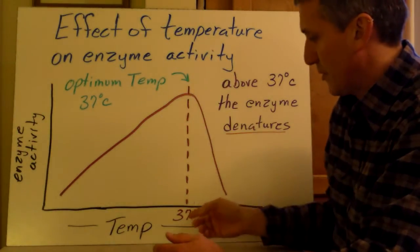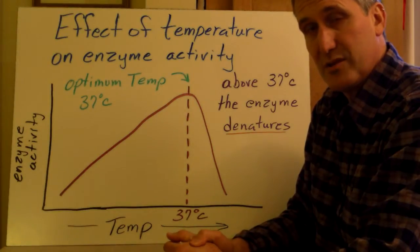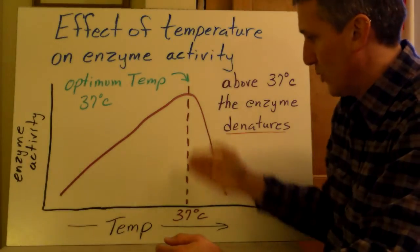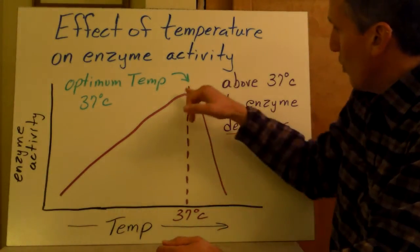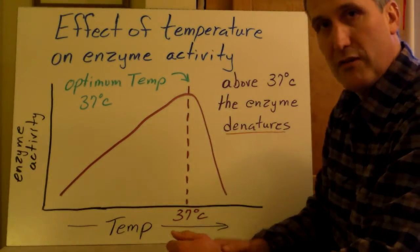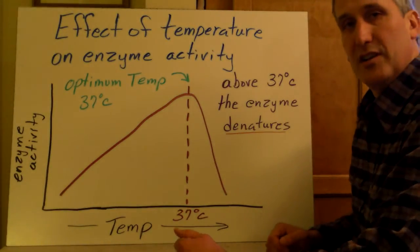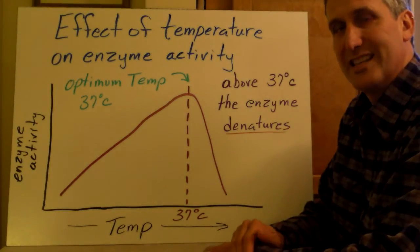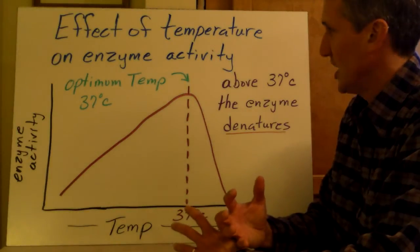In this case, the optimum temperature is 37 degrees Celsius, which is actually body temperature for humans. So if this was a human enzyme, obviously it would be optimized to work at body temperature. Once it goes above the optimum temperature, you'll see how the activity drops off rather sharply. That's because above 37 degrees Celsius, the enzyme begins to denature, which means it loses its shape.